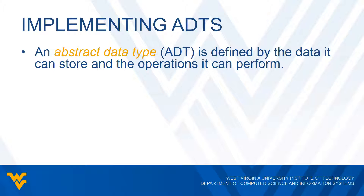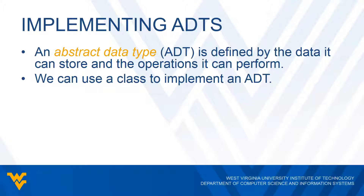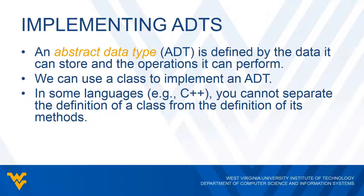We can actually use a class to implement an abstract data type. In some languages such as C++, we can't separate the definition of a class from the definition of its methods. So if the user of a class looks at the class definition, they can also see the definitions of the methods — meaning the user would see the implementation details. We cannot separate the implementation details from the specification details.